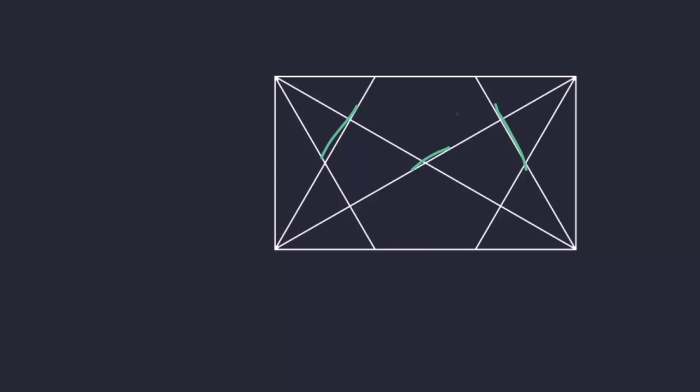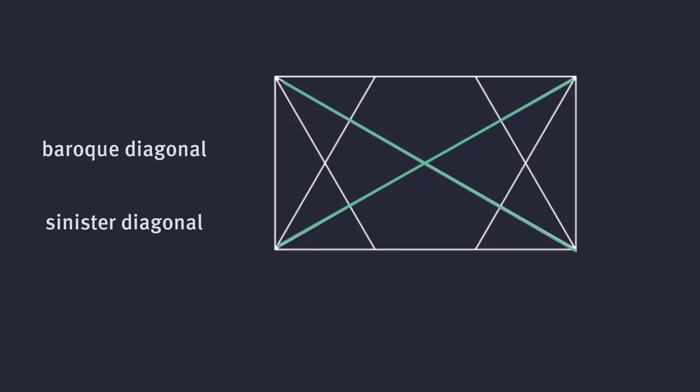To explain very quickly what these lines are: we have first the two diagonals. The one going up is called the Baroque diagonal and the one going down is called the Sinister diagonal. I'll explain a little bit later why it matters and has more impact than we think. The second element is called the Reciprocals — perpendicular lines that go from one corner and are perpendicular to the nearby diagonal.